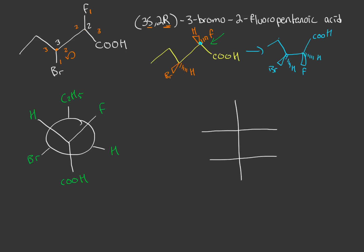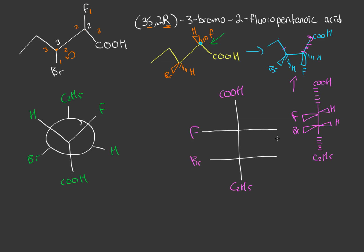Now it's a lot easier to draw the Fischer projection. We pick our side — the carboxyl is at the top and the ethyl group is on the bottom. Looking at it, the fluorine is pointing out towards us, the bromine is on our left also pointing out towards us, and the hydrogen is coming out towards us on our right. The carboxyl group and ethyl group go backwards. So we place the fluorine and bromine on the horizontal bonds here, and hydrogen over here.